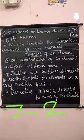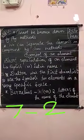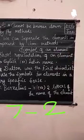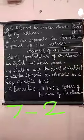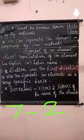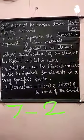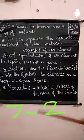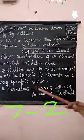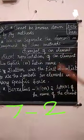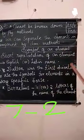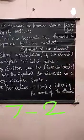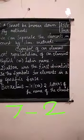Dalton was the first scientist who introduced the use of symbols for elements. Then Berselius, another scientist, suggested that the symbol of elements should be taken from one or two letters of the name of the element.